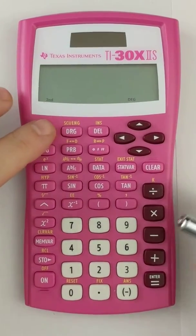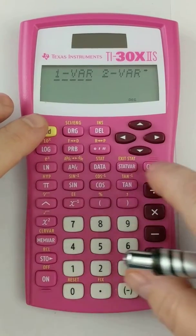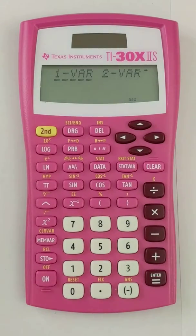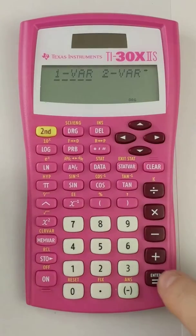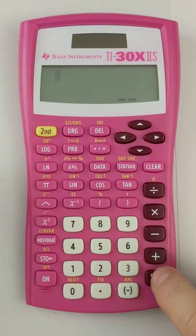So I need to press second and stat, and then you have a choice of one variable statistics or two. We want one, so I'm just going to hit enter on one.